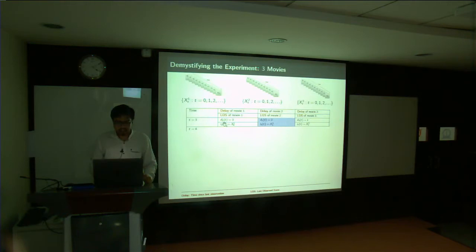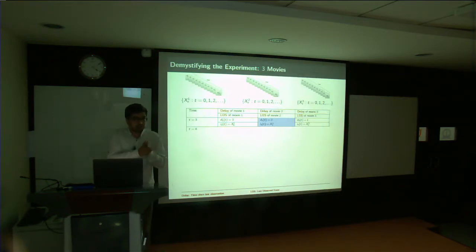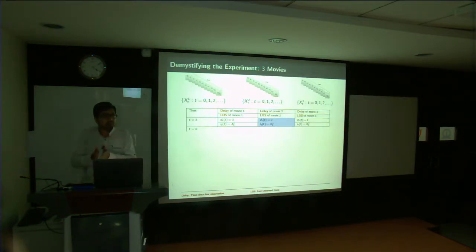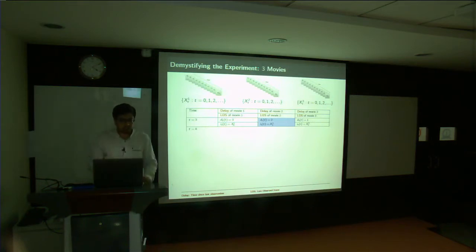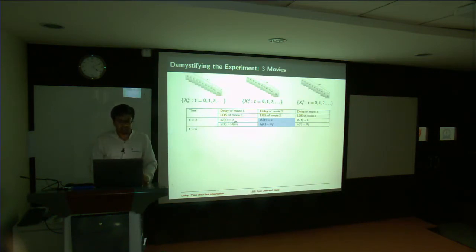At time t equal to 0, you selected movie 1; at time 1, movie 2; at time 2, movie 3. Now you are at the start of time 3. The delay is how far back in time since you observed movie 1 — it was 3 time instants back, only at time 0.